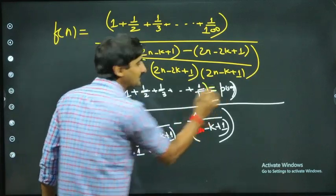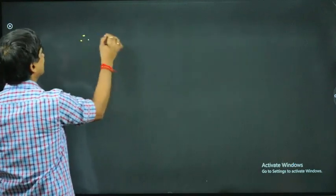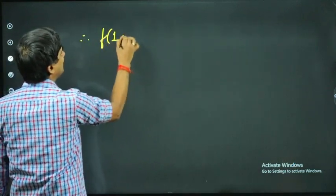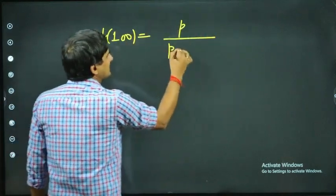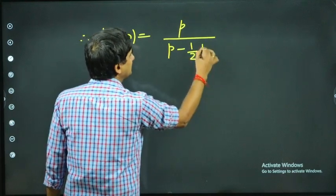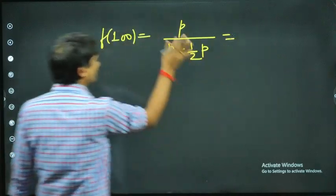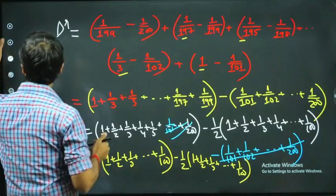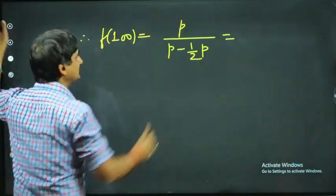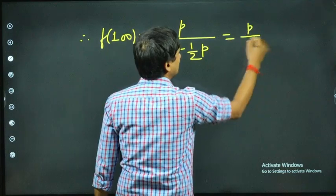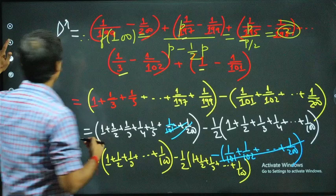Since I assumed 1 + 1/2 + ... + 1/100 = p, substituting: the value of f(100) = p ÷ (p − p/2) = p ÷ (p/2) = 2. So the answer is 2.